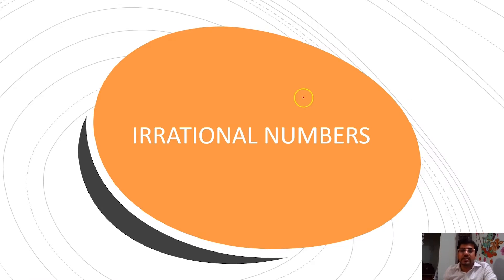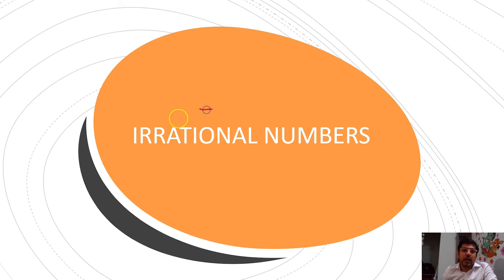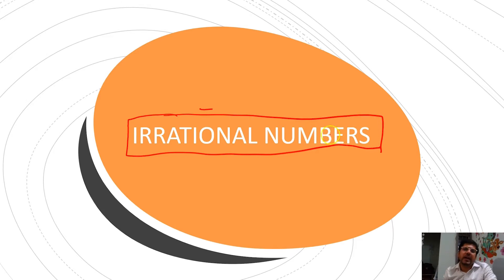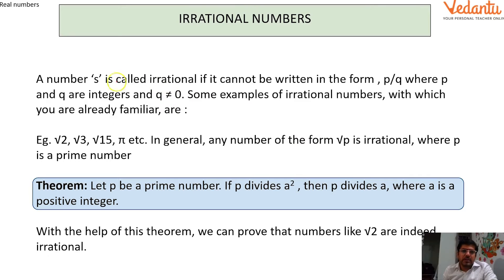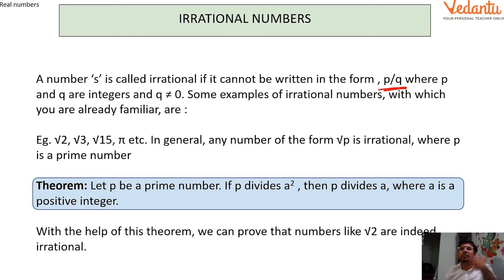In this session on Real Numbers, we are going to prove how a number is irrational. You may have studied this in Class 9 as well, but there are still some misconceptions and unanswered doubts. An irrational number cannot be represented in the form p/q. To prove a number like √2 or √3 irrational, we use the method of contradiction — we assume the number is rational in the form p/q, and then prove that assumption leads to a contradiction.